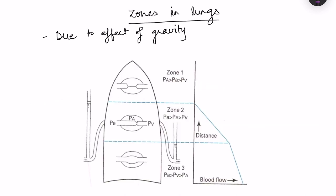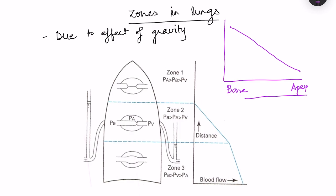Another important concept is the zones of the lungs, which arise due to the effect of gravity on intravascular pressures. As discussed in ventilation-perfusion ratio, pulmonary blood flow decreases from base to apex. This happens because hydrostatic pressure falls as we move above the level of the heart — pulmonary arterial pressure is higher at the base and lower at the apex, causing less blood flow at the apex.